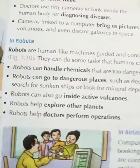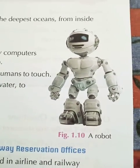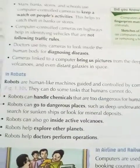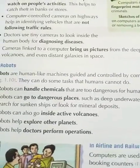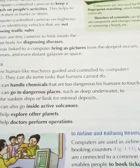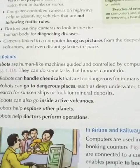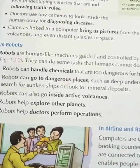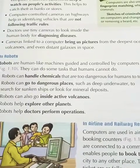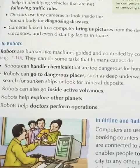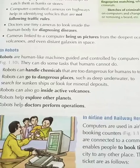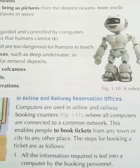The next heading is: in robots. Robots are human-like machines which are operated by computers. They can do work which humans cannot do. For example, they can handle very dangerous chemicals. They can go to dangerous places like deep underwater to find minerals or explore sunken ships. They can also go inside volcanoes and to other planets, and they even help doctors in operations.